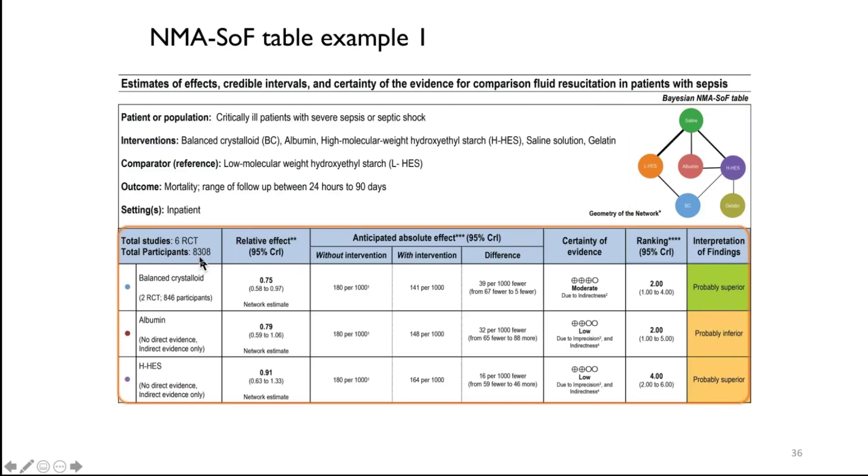Then moving on from here, what the summary of findings table for network meta-analysis entails is first of all the total number of studies, total number of participants that is similar but presented differently here for the outcome. The outcome here is mortality for different fluid resuscitation methods for patients with sepsis. This would be the number of trials that would have participated in the overall network and then we provide information about the actual interventions. Starting with the total number of trials, the relative estimates, the absolute estimates, the certainty of the evidence, the actual ranking, and then an interpretation of the finding that I will get back to in a little bit.